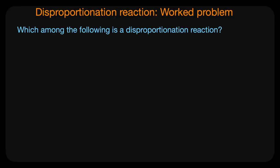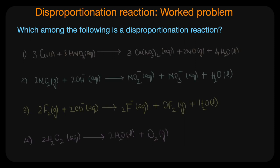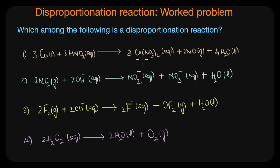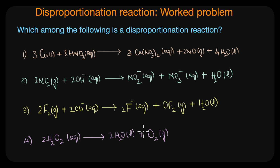So to conclude, H3PO2 also undergoes a disproportionation reaction. Now let's look at the next question: which among the following is a disproportionation reaction? We know that in a disproportionation reaction, an element in an intermediate oxidation state is simultaneously oxidized and reduced. Let's check which reacting species have the central element in three different oxidation states.